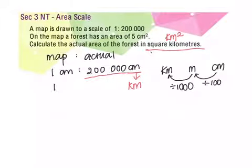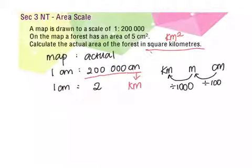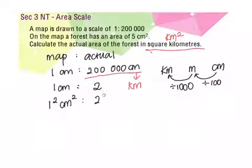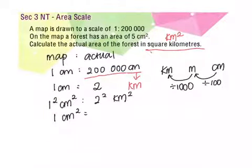Now we are in the correct units. The second part is to find the area scale. We take 1 cm² is to 2² km². For the next line, we are not doing any calculations yet — we simplify. So 1 squared is 1 cm², and 2 squared is 2 times 2, which is 4 km². Now that we have our area scale, we move on to the main part of the question.